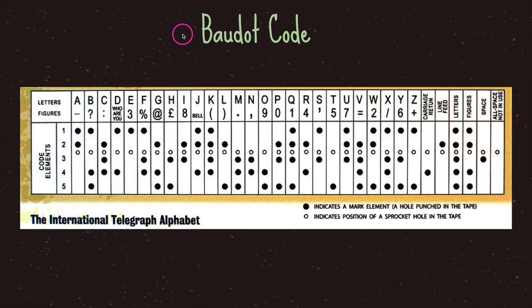Let's segue into Baudot code. Baudot code is an early character encoding invented around the 1870s. Earlier systems like Morse code sent characters by distinguishing short gaps — dots and dashes. However, Baudot code sent characters together in a stream, meaning each character code was exactly the same length and had the same number of elements — everything is five bits long. Baudot code can be thought of as the first successful digital code for telegraph, and in fact ASCII was inspired by and based on Baudot code.